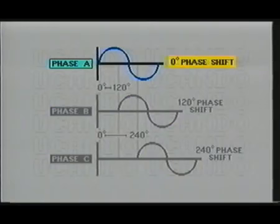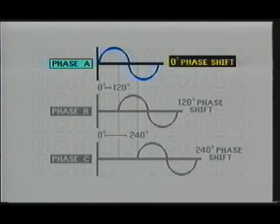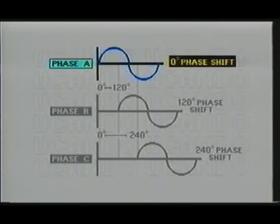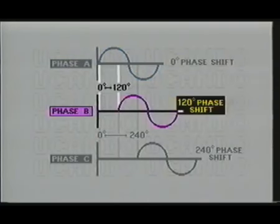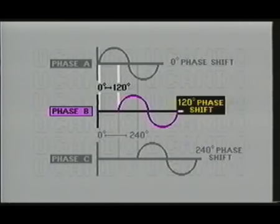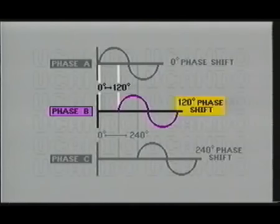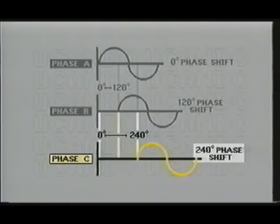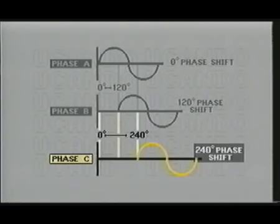Notice that phase A starts at the zero degree point and completes its cycle at 360 degrees. Now notice that phase B starts 120 degrees from the phase A sine wave and completes its cycle at 480 degrees. Phase C, on the other hand, starts 240 degrees from phase A and completes its cycle 600 degrees from the start of phase A.